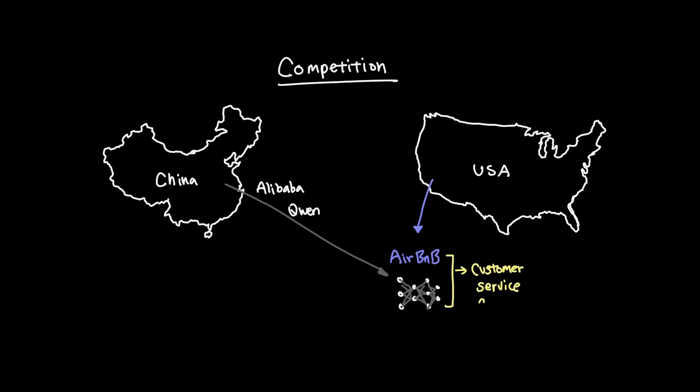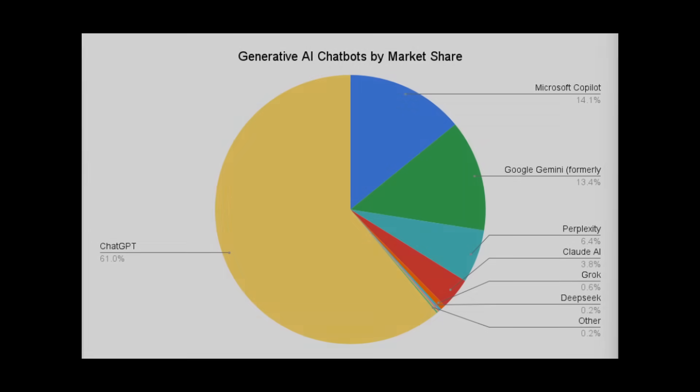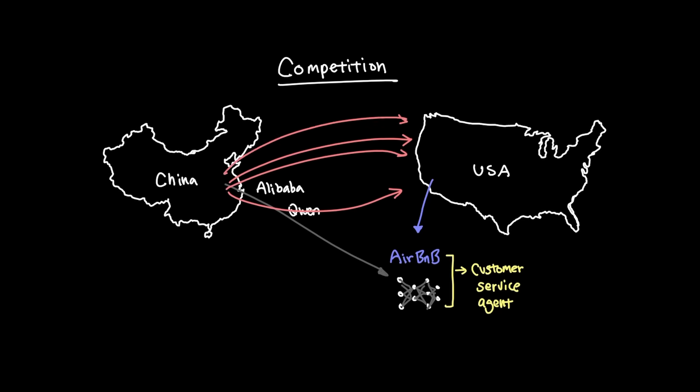Let's briefly talk about the competition between China and the US in this regard. Recently, Airbnb picked the Chinese firm Alibaba's Qwen model as their primary model for their consumer service agent. So even though on a consumer level, DeepSeek is still relatively small, enterprise-level adoption of Chinese models will continue to expand for as long as models like DeepSeek v3.2 continue to lower the cost without sacrificing the performance.